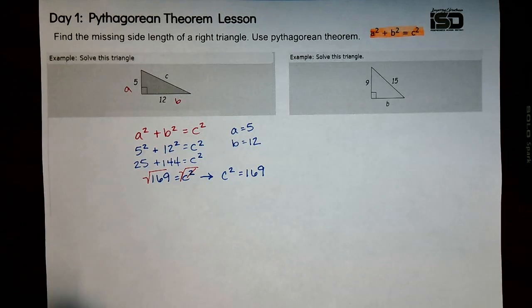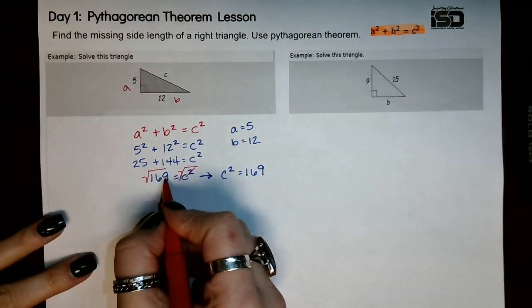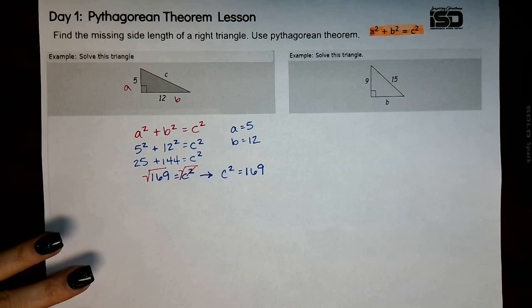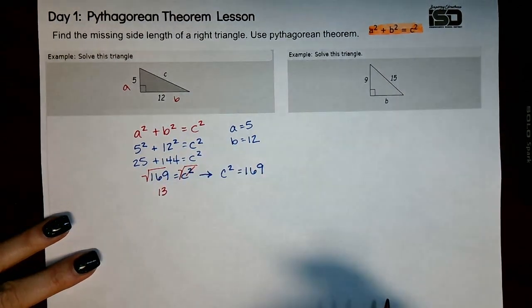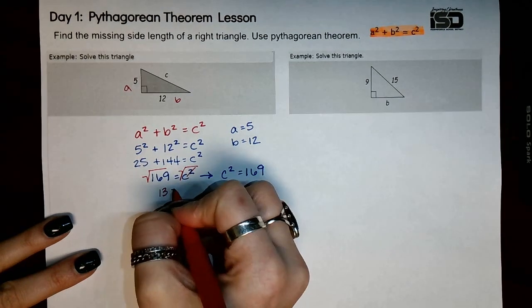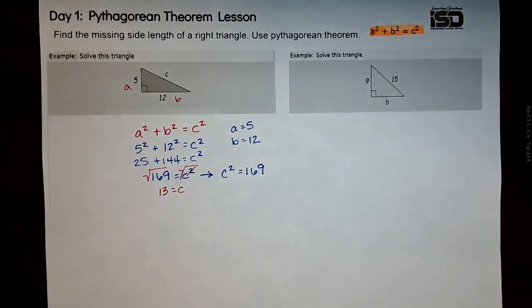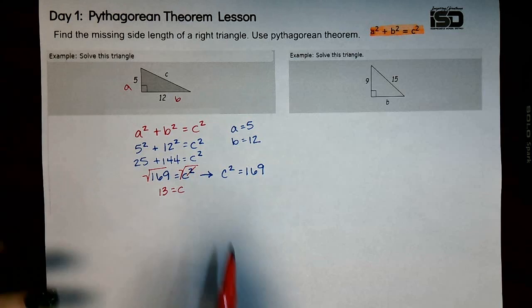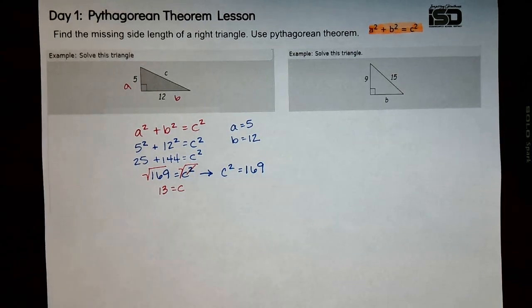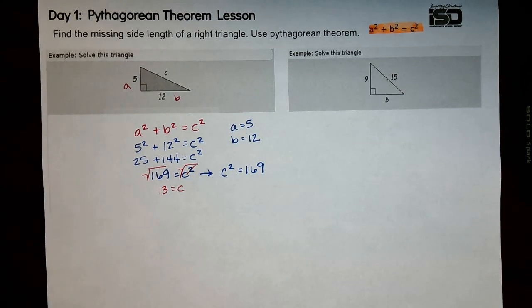Of course, you can use your calculator. 169, so you're finding the square root. Square root of 169 is 13. And then that cancels out, so 13 equals c. So if you were asked in this situation, what is your hypotenuse equal, or what is the missing side? You would say that c equals 13, or your hypotenuse is 13 units.